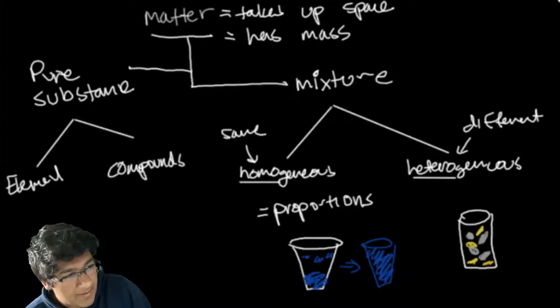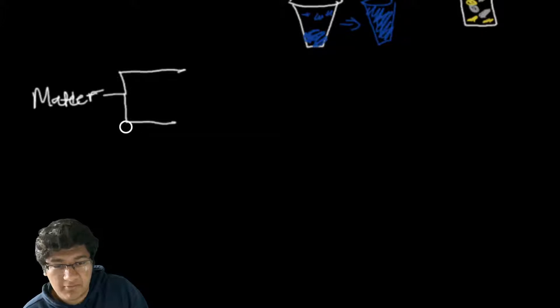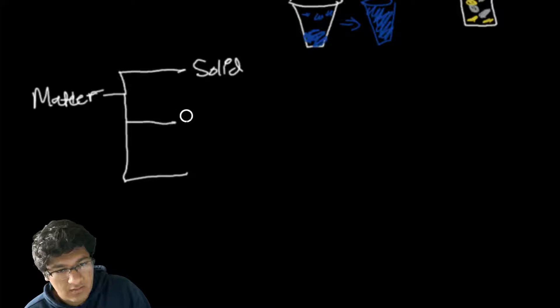We can further classify matter itself into forms. Right now we'll keep it at three different states. Matter is made of three different states: solids, liquids, and gases.